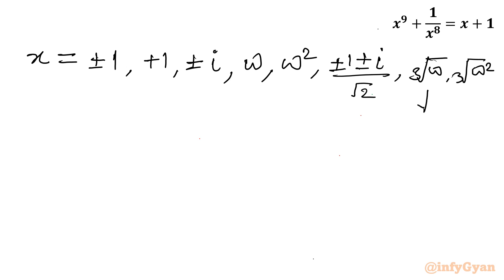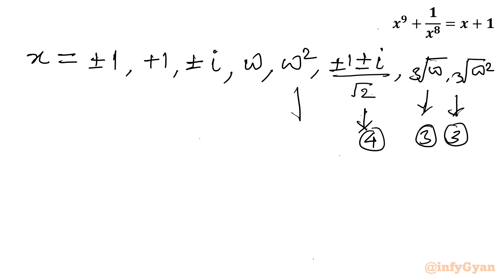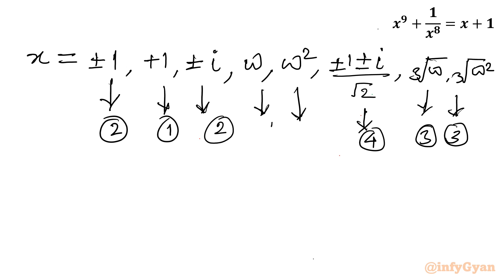Adding up: 3 + 3 = 6, plus 4 = 10, plus 4 = 14, plus 3 = 17. That matches the degree of the polynomial exactly — 17 solutions in total.